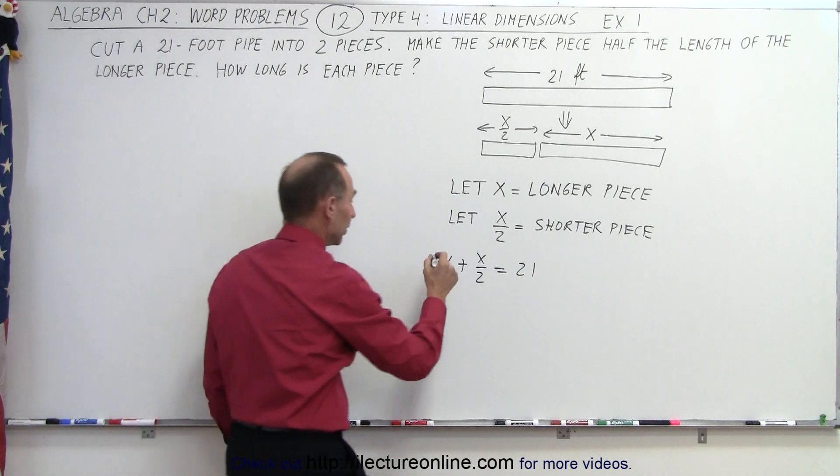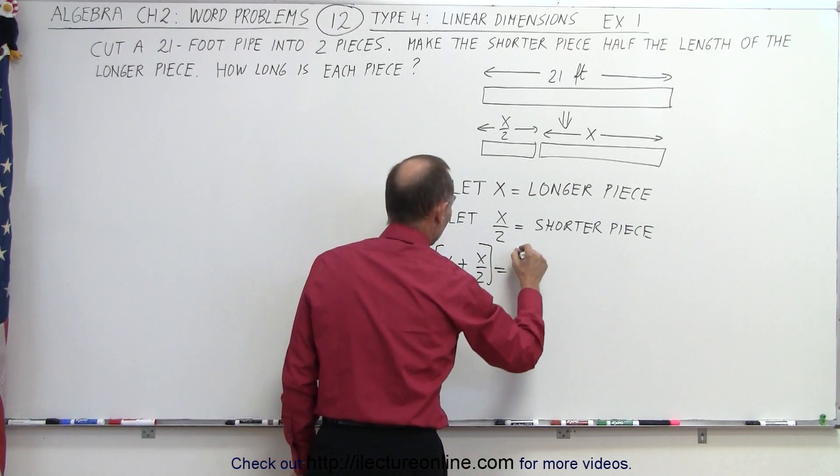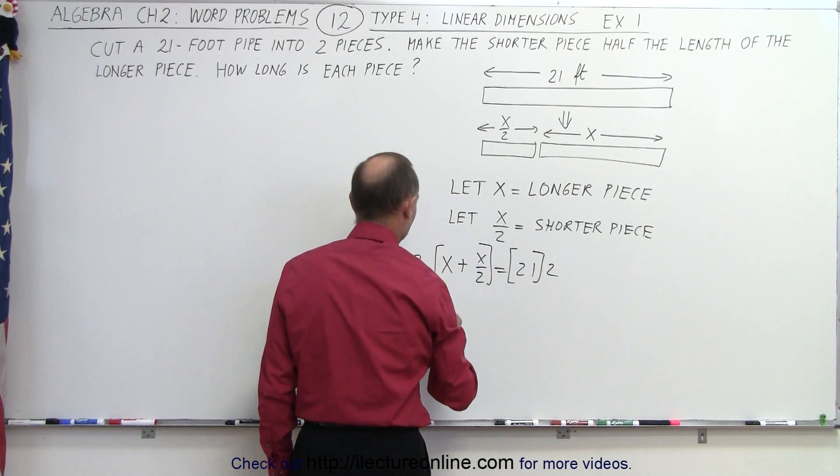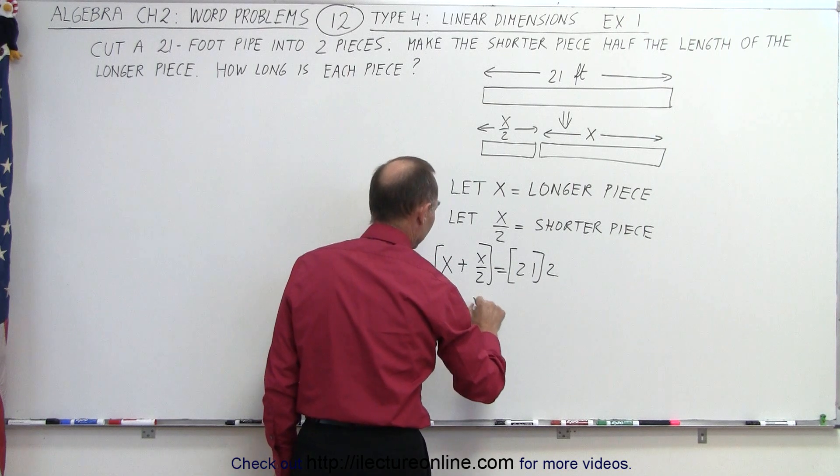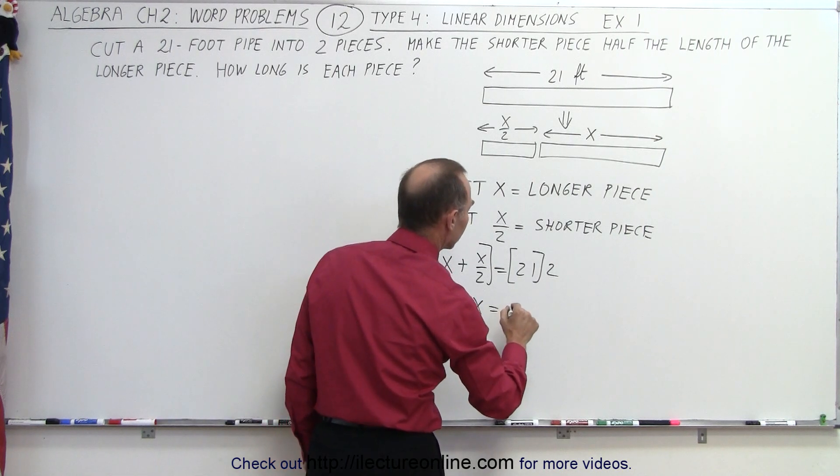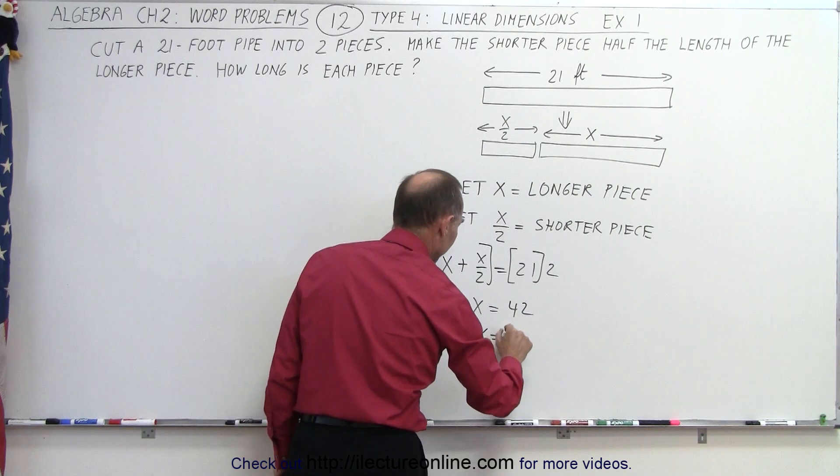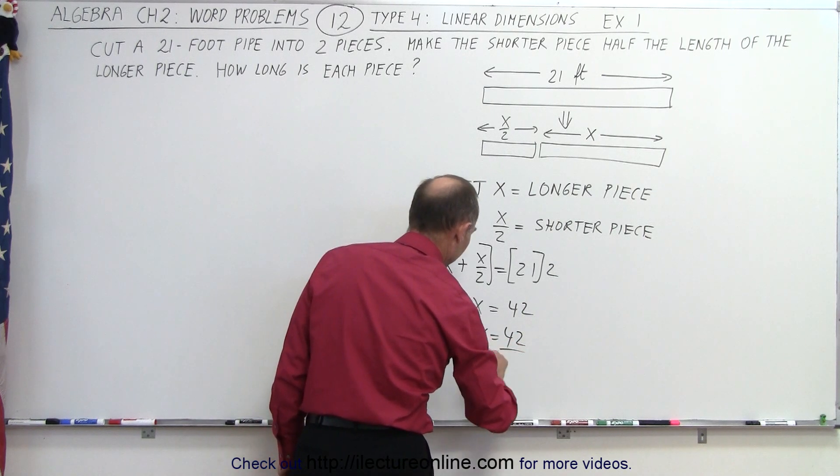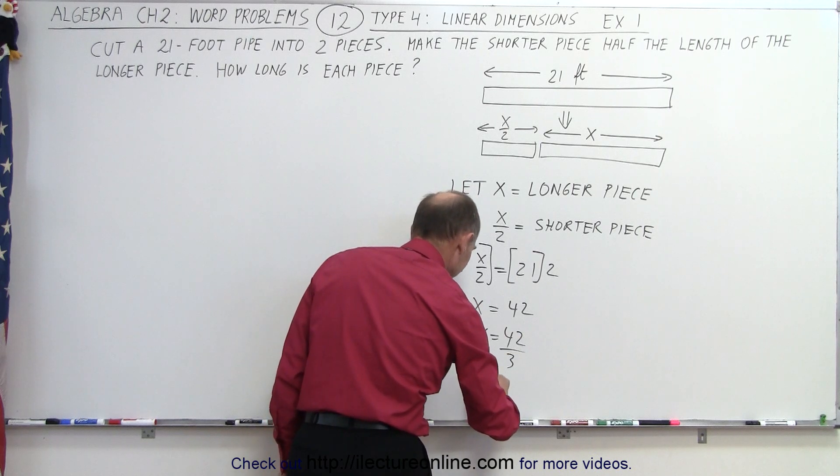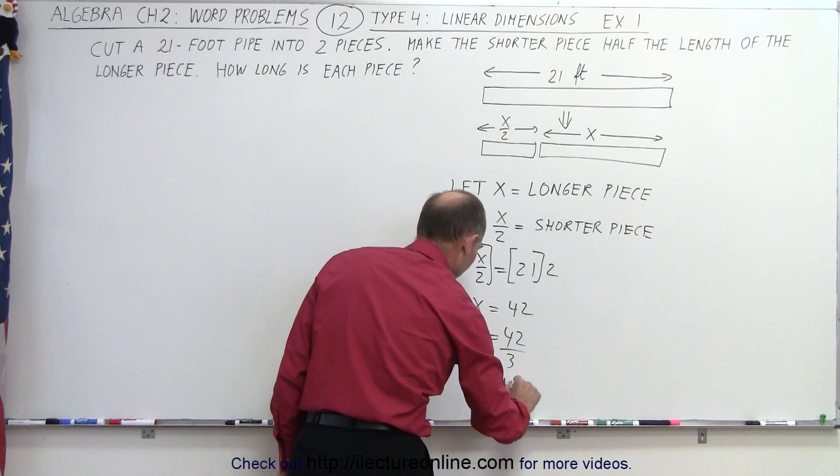First, we want to get rid of the fraction, so we're going to multiply both sides by 2. That gives us 2x plus x equals 42. 3x equals 42. Divide both sides by 3. 3 goes into 42 fourteen times, so x equals 14.